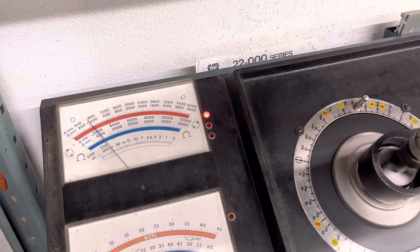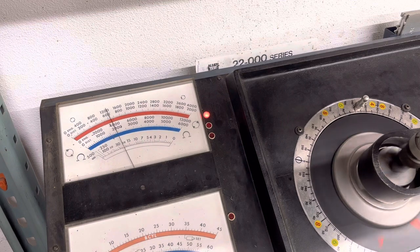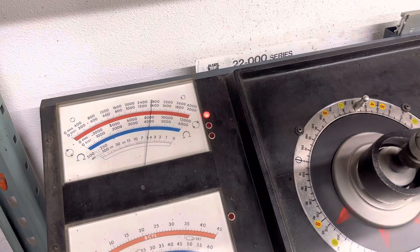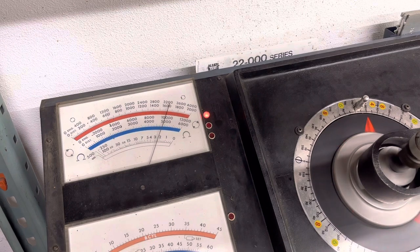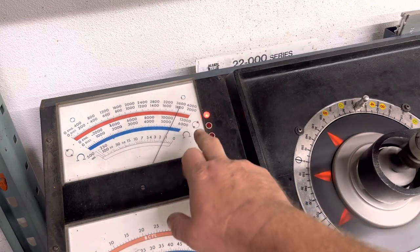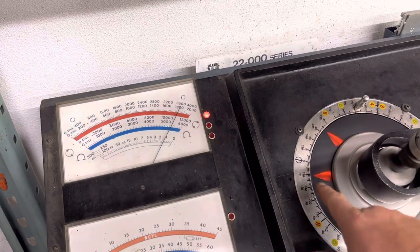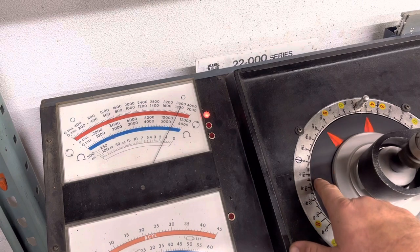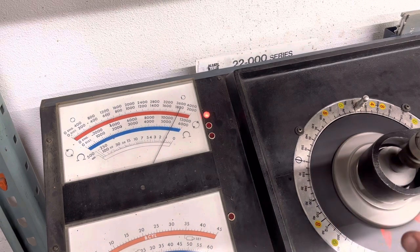But I'm going to go ahead and crank this up and see where we get our full advance in at. Right about there. We're about 3,600 RPM on the tachometer, and we've got 22 degrees of advance out of the distributor.